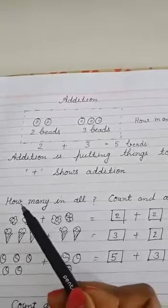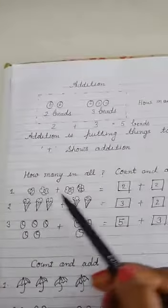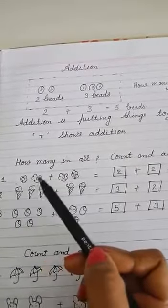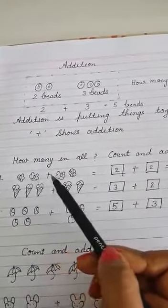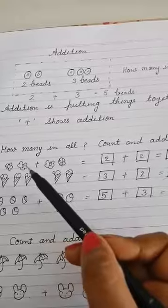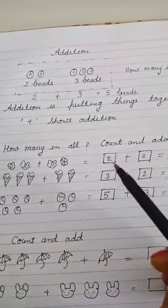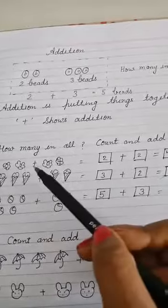So same way our question is how many in all? Count and add. Question number one. Look at the picture. So first we will count one, two. So we will write in first box two.